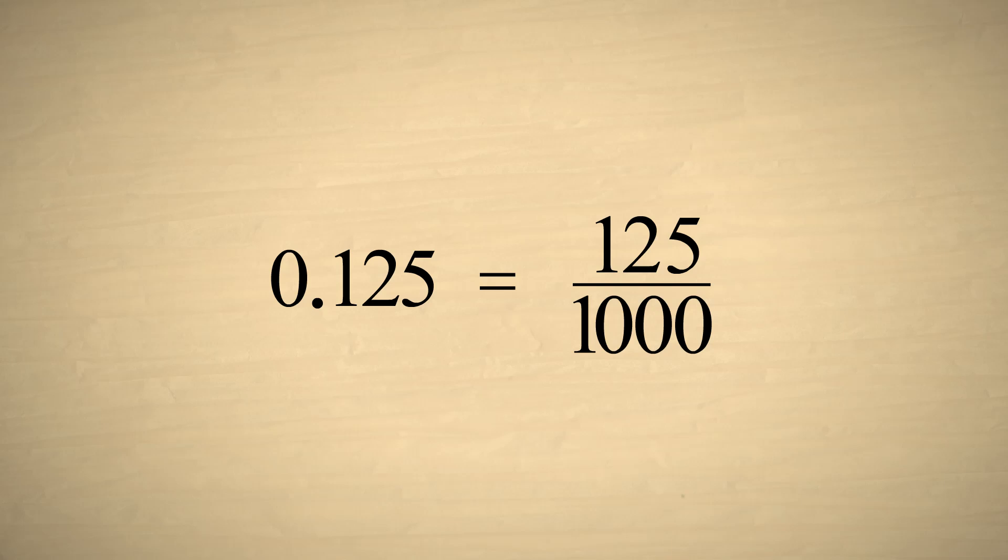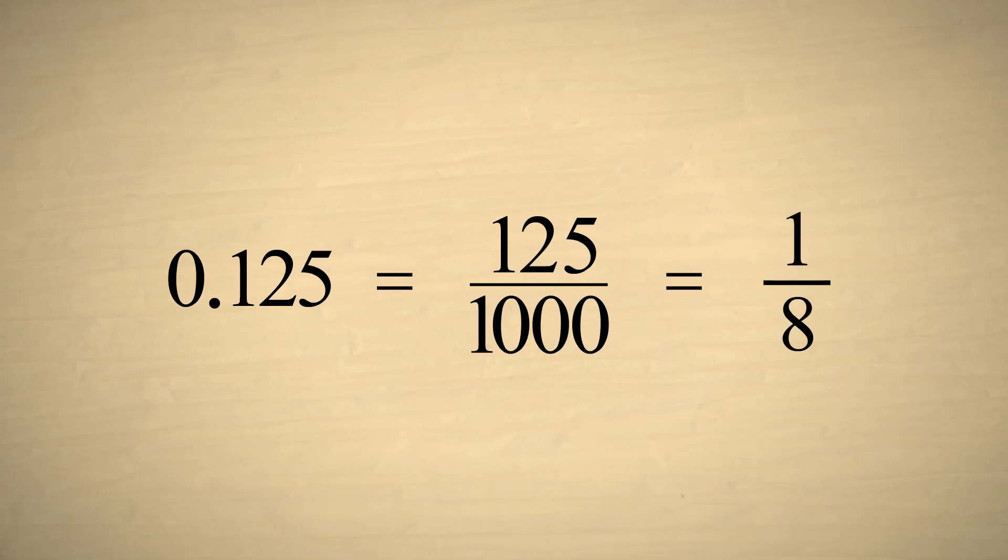Now, using the techniques we learned in our lecture on reducing fractions, we can simplify this fraction to one-eighth. So we have converted the decimal number 0.125 to the fraction 1/8.